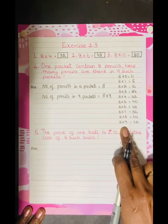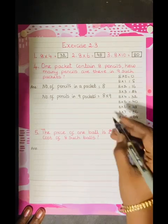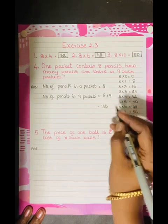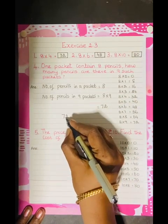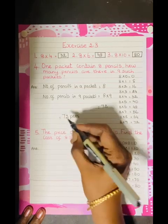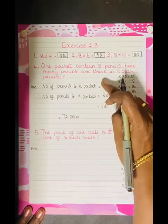See, 8 times 9 is 72. It's equal to 72. How many pens are there? 72 pens. See, all the equals should be in the same line.